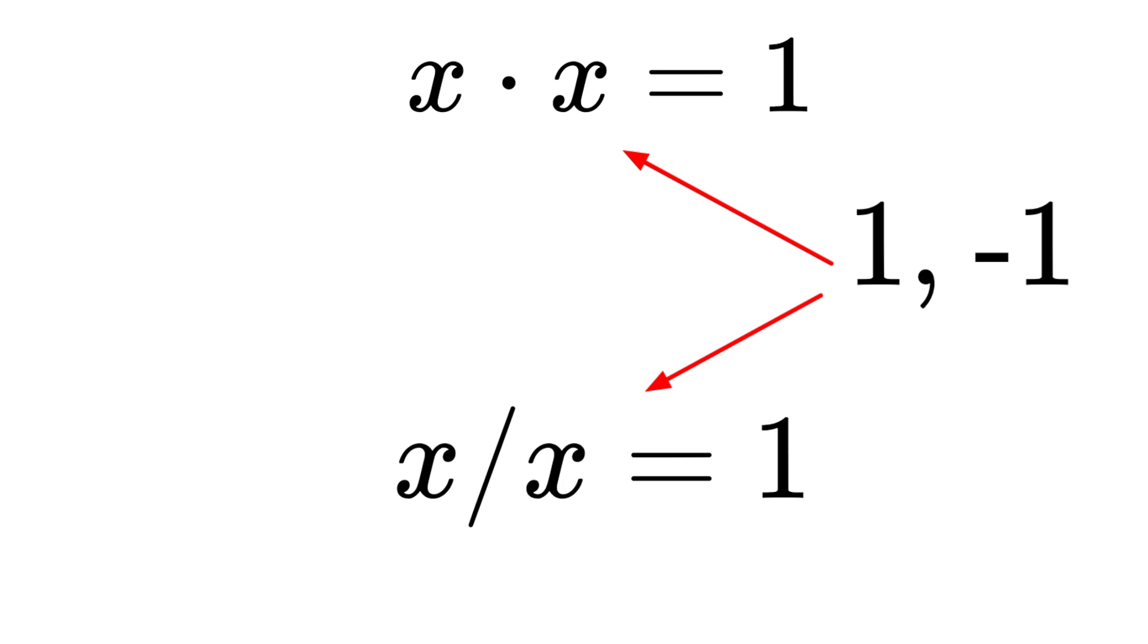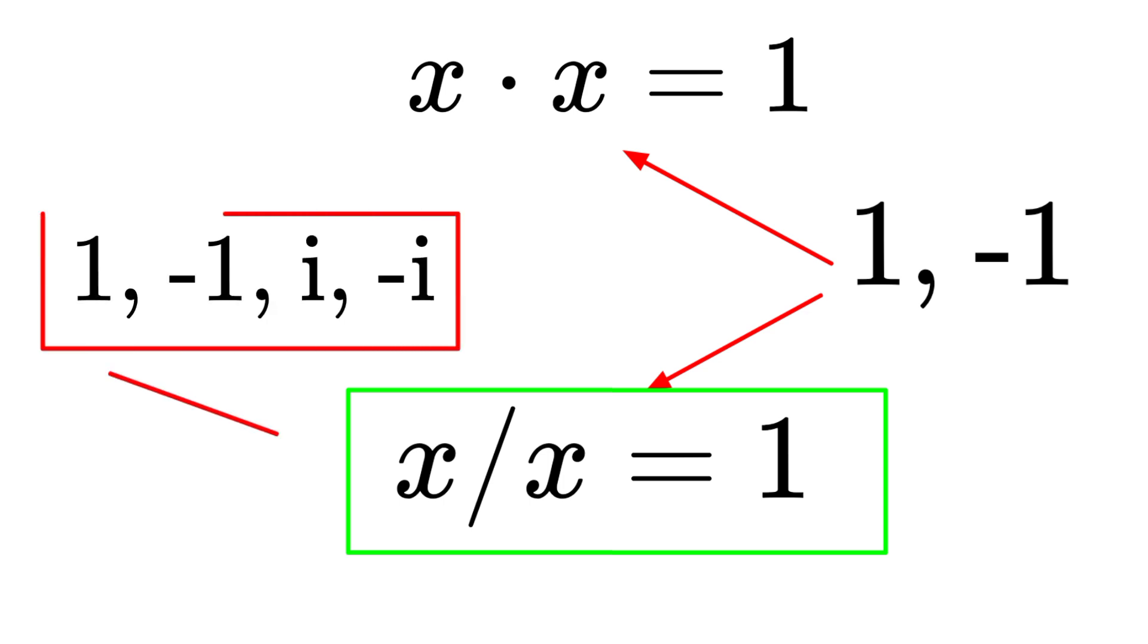But an interesting aspect is that the solutions to x times x equals negative one are the positive unit of complex i and the negative complex unit, negative i.